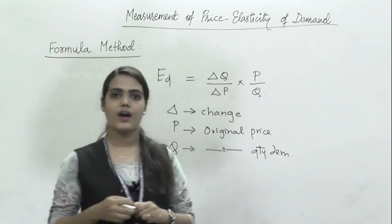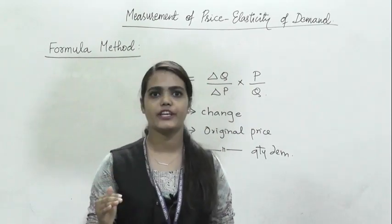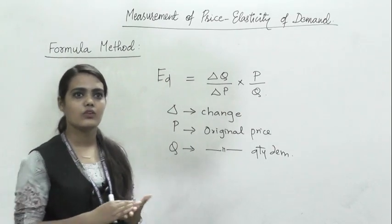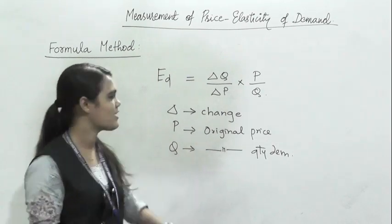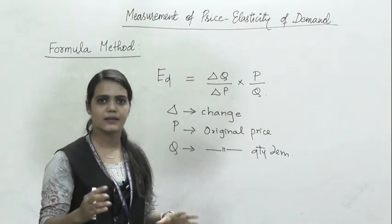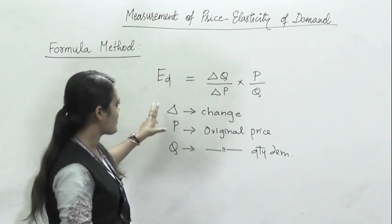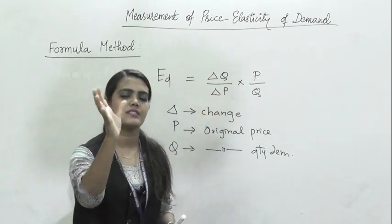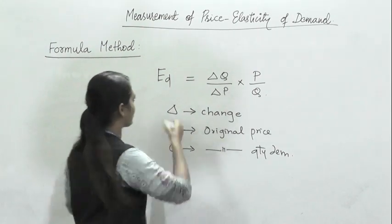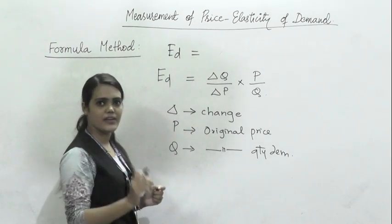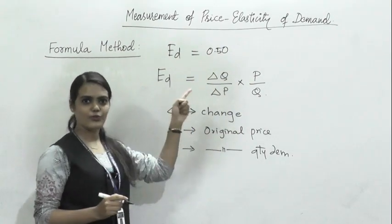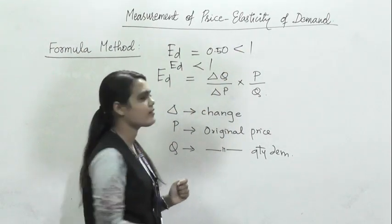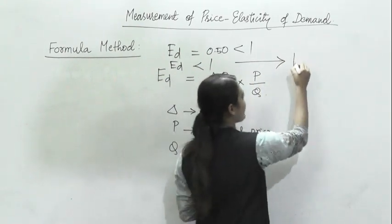Whenever you are asked to calculate elasticity and the method is not given, you can use the formula method. For example, if the entire calculation comes to 0.50, that indicates it is less than one — so the commodity in the question has inelastic demand.